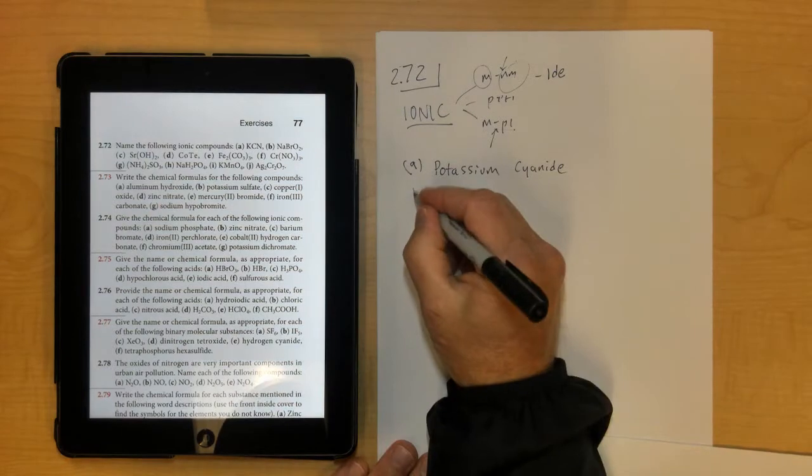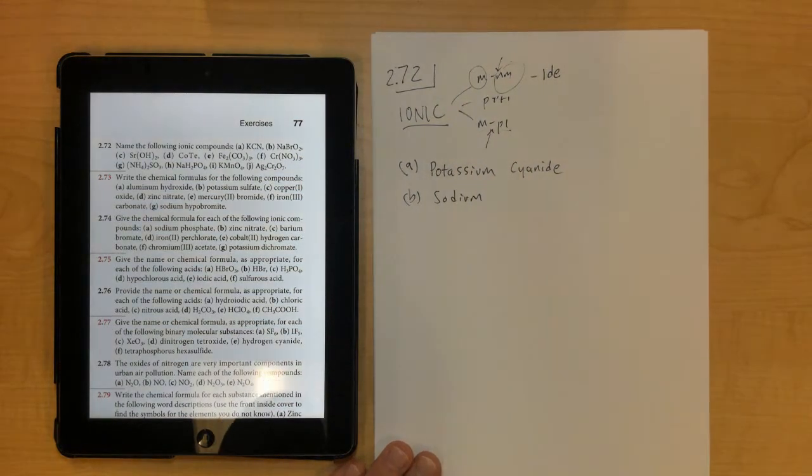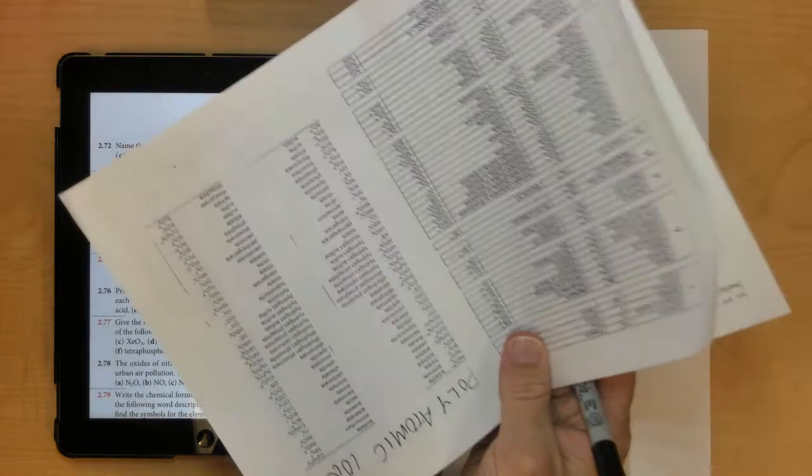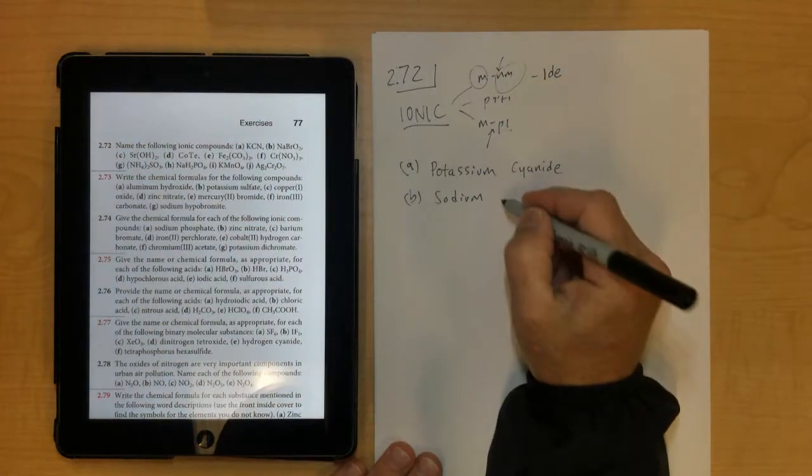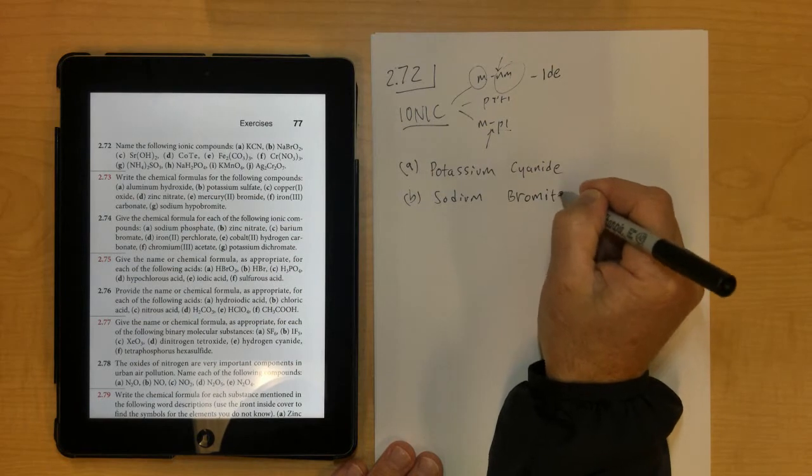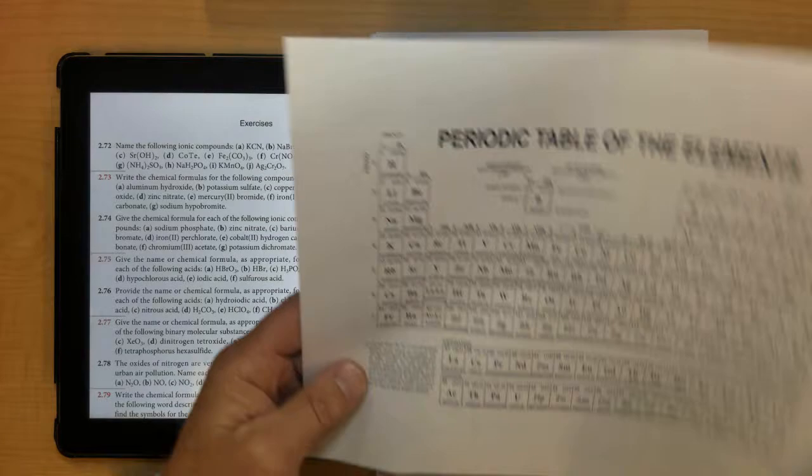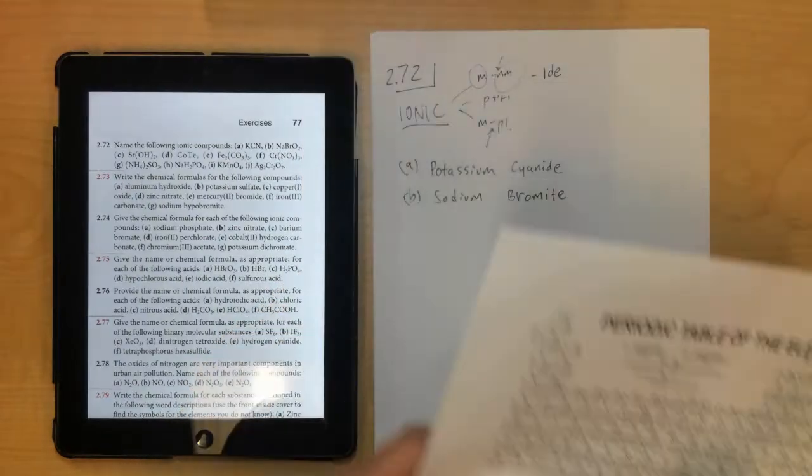Letter B, sodium, and then BrO2, I'll have to look that polyatomic ion up back here, that's bromite, sodium bromite. Once again, no Roman numeral needed because sodium is in group 1.